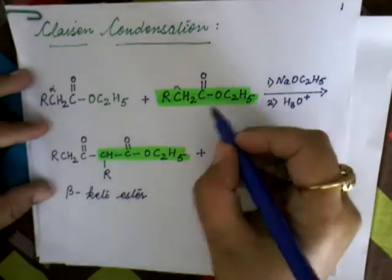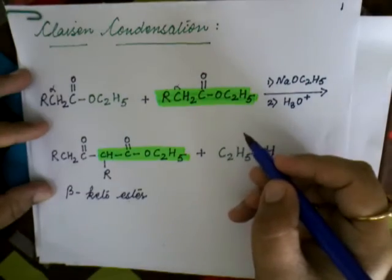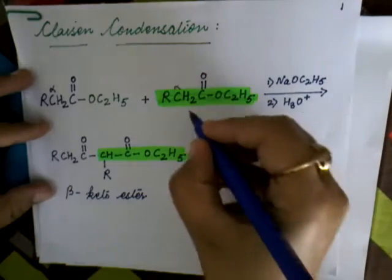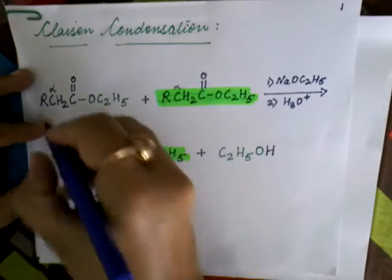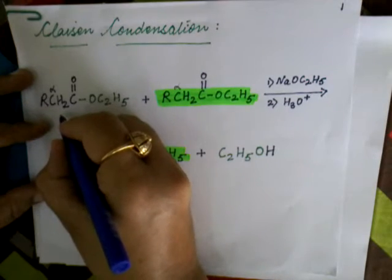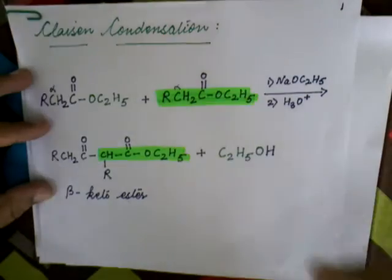Two ester molecules which are there in Claisen condensation work separately. One will give the enolate ion and another will act as acylating agent. So let's see in the mechanism how it works.